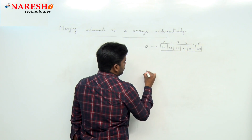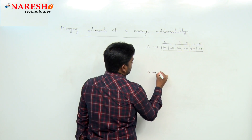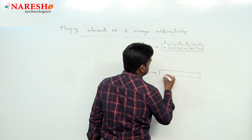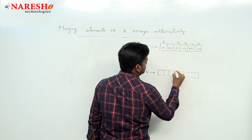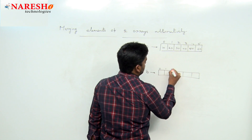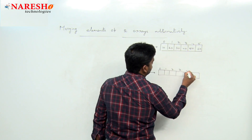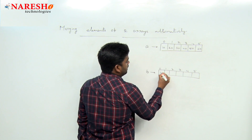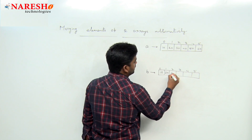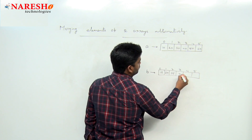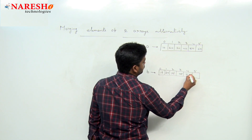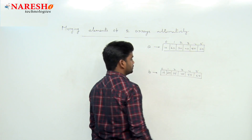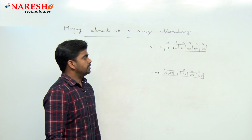Next we are taking one more array 'b' with the same size 6, indices 0 to 5, and elements: 15, 25, 35, 45, 55, 65.